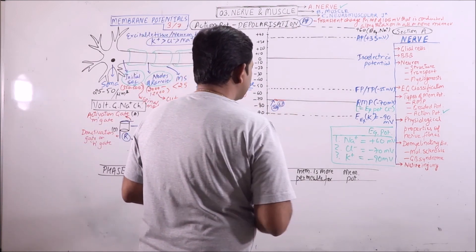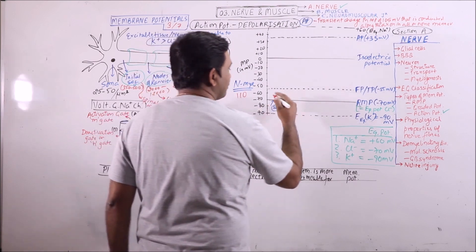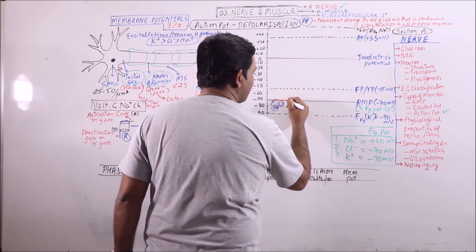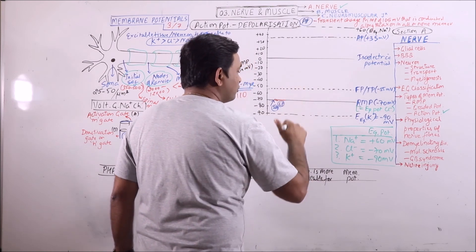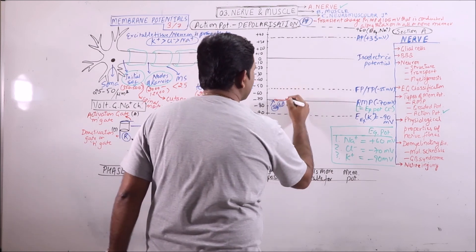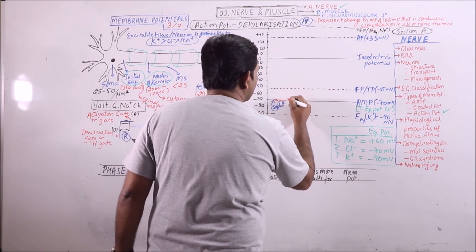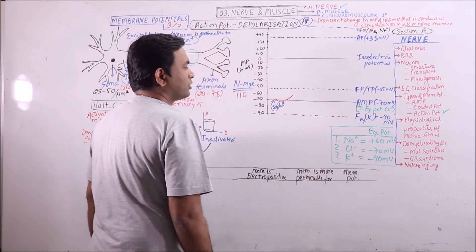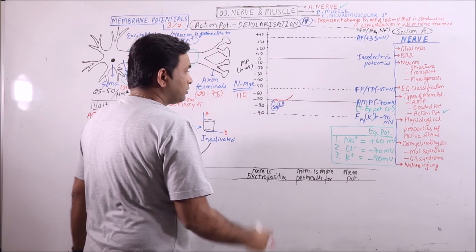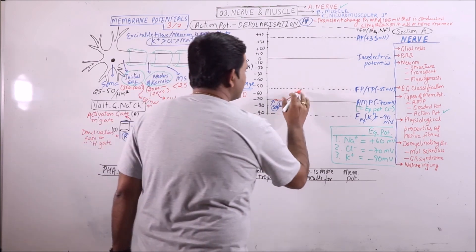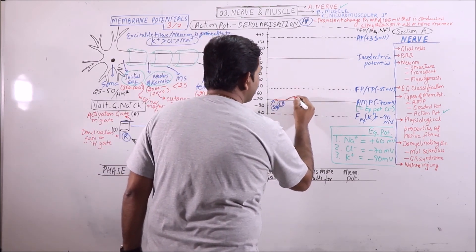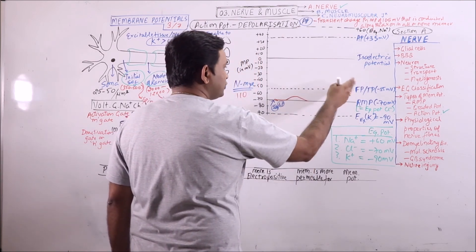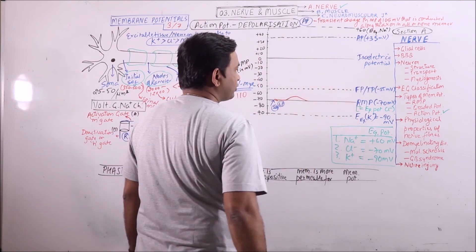Then some mechanically gated sodium channels will be stimulated. They will open and some cations will move inside the neuron. That will raise the membrane potential. Sometimes these may be weak, so they can give rise to a graded potential which may not be sufficient to reach the firing potential.